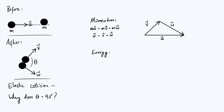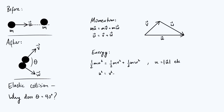What about conservation of energy? There's no potential energy involved here so we just have to think about kinetic energy. We get half m u² plus zero (because the other particle was stationary) equals half m v² plus half m w², where the notation means u, v, w are the magnitudes of the respective vectors. The halves and the m's cancel, and we get u² = v² + w². Again, you only get this simplification if the particles have equal mass.